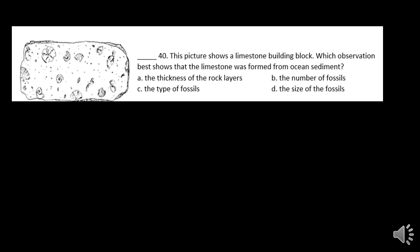Picture shows a limestone building block. Which observation shows that limestone once formed ocean sediment? Well, if it's got ocean sediment, it should have ocean fossils in there.